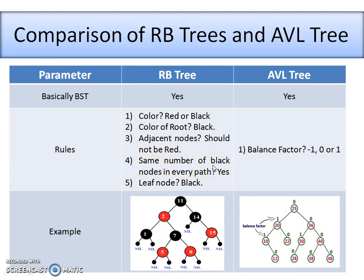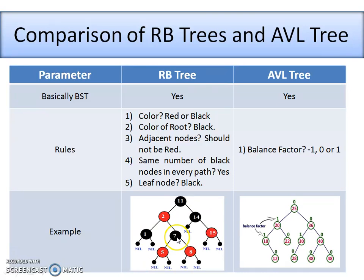Now let's check the number of black nodes in every path. There are nine paths in this tree — the number of nil leaf nodes determines the number of paths. Counting the black nodes in the first path: one, two, and three. In the second path: one, two, and three. In the third and fourth paths similarly: three black nodes each, and so on. You can pause the video and verify that every path has three black nodes — the count is the same. That's why the fourth property is also satisfied.